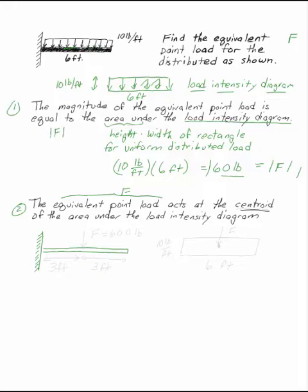So, my load intensity diagram is this rectangle that's 10 pounds per foot over 6 feet. This is the load intensity diagram. The centroid of the rectangle is in the middle. F is going to act at the middle. So, in this case, my F, which is 60 pounds, acts right in the middle of my beam, 3 feet from either end.